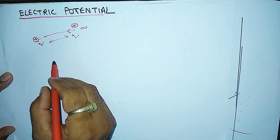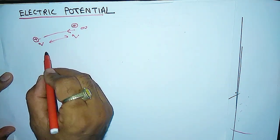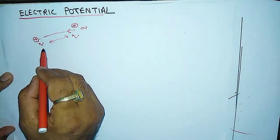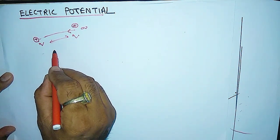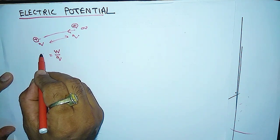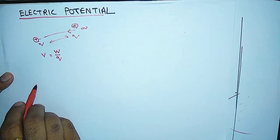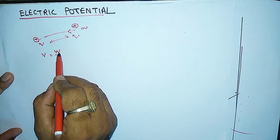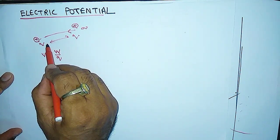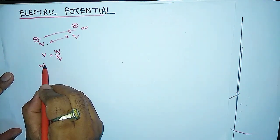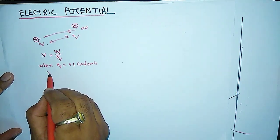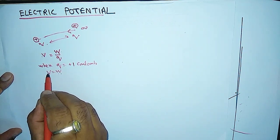This is the electric potential. The electric potential is the work done in bringing a unit positive charge from infinity to that point. So when Q is equal to plus 1 coulomb, then V is equal to W. This work is equal to the electric potential at that point.